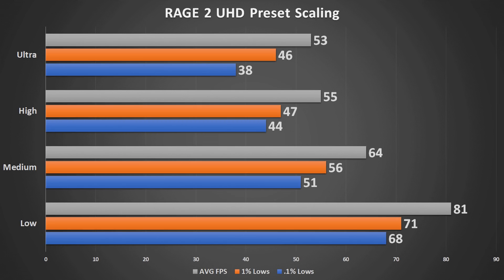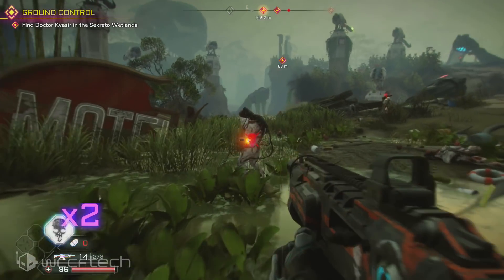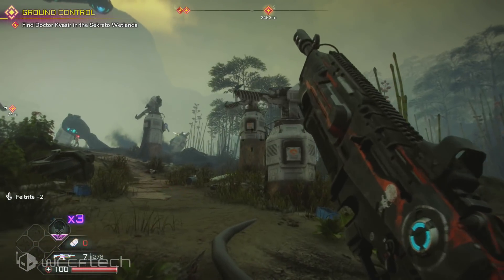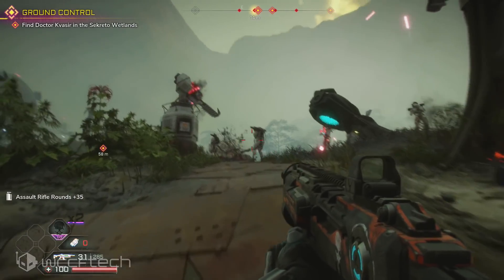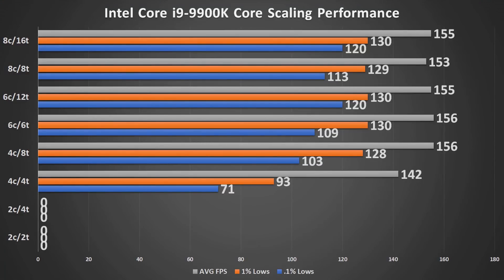Core scaling is interesting with newer games, especially with low-level APIs — does an abundance of cores and threads actually help? In Rage 2, once you hit four cores and eight threads, returns are arguable and within margin of error. Going from four threads to four cores does show a decent boost, tested with an RTX 2080 Ti. The CPU was locked at 3.5GHz across all cores so clock speed couldn't compensate for lower core counts. Dual cores are pretty much worthless here.